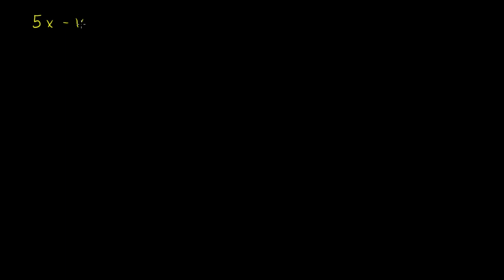Let's solve a few more systems of equations using elimination, but in these it won't be a one-step elimination. We're going to have to massage the equations a little bit in order to prepare them for elimination. So let's say we have 5x minus 10y is equal to 15, and another equation: 3x minus 2y is equal to 3. We want to do this using elimination. We could use substitution or graph both lines, but we're going to use elimination.